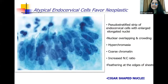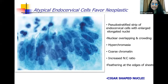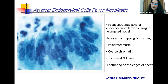Whereas when we see atypical endocervical cells favor neoplastic, we see strips of pseudostratified epithelium which is columnar in shape with oblong cigar-shaped nuclei. There is significant nuclear overlapping, enlargement, pseudostratification and loss of polarity. There is hypochromasia, coarse chromatin, a higher N:C ratio, and there may be feathering seen at the edges.